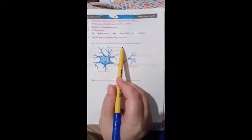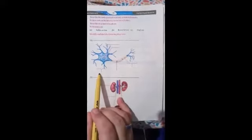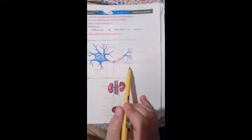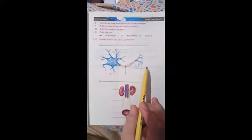This is dendrite, nucleus, cell body, axon, terminal ends of axon. The answer is on page number 2.